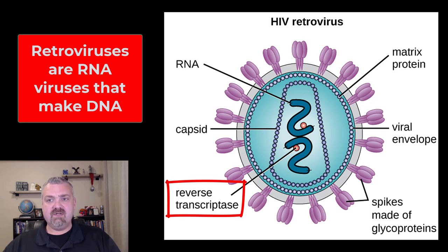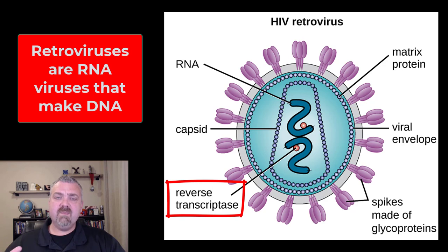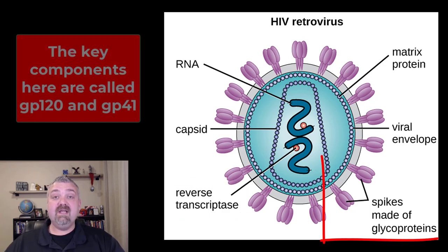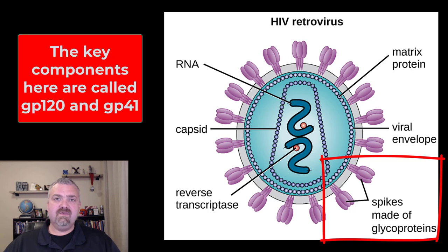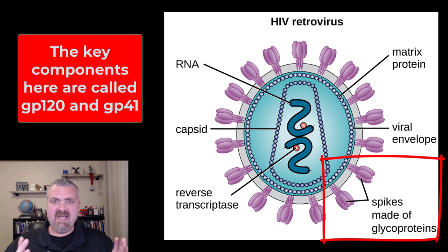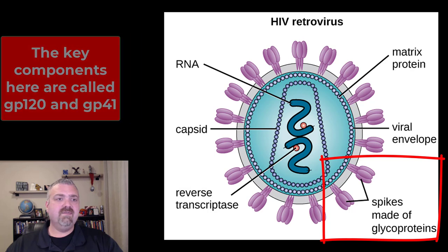So this is an RNA virus and it's a retrovirus. The last important structural feature that helps you understand how it infects our cells is those glycoprotein spikes on the right-hand side. The ends of these spikes are called GP120, and the stalk will be GP41. Both play a role. That's the basic structure of the virus.